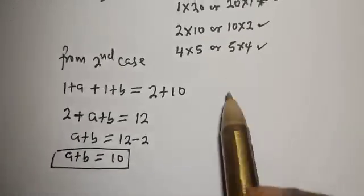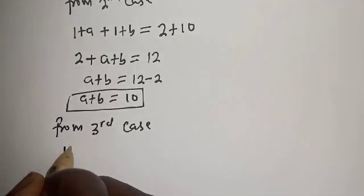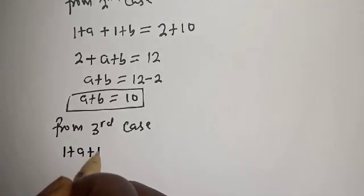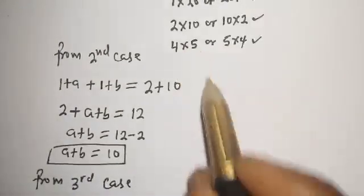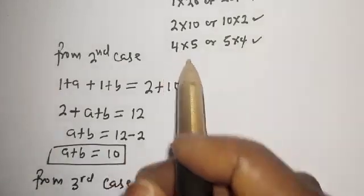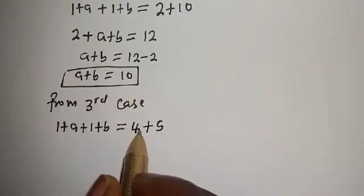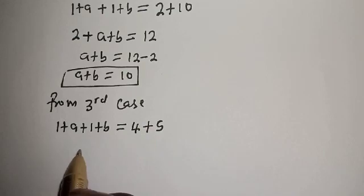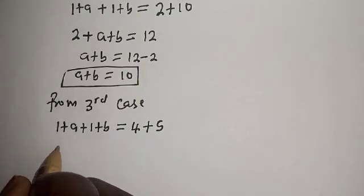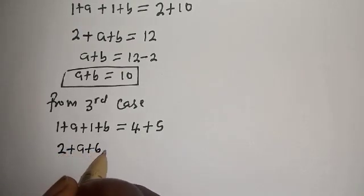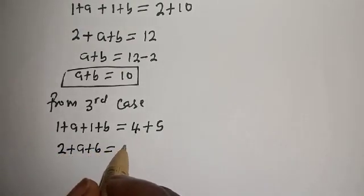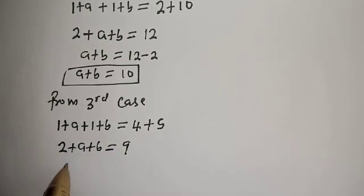From the third case, (1 + A) + (1 + B) = 4 + 5. So 2 + A + B = 9, and therefore A + B = 9 - 2 = 7. This is another value for A + B.